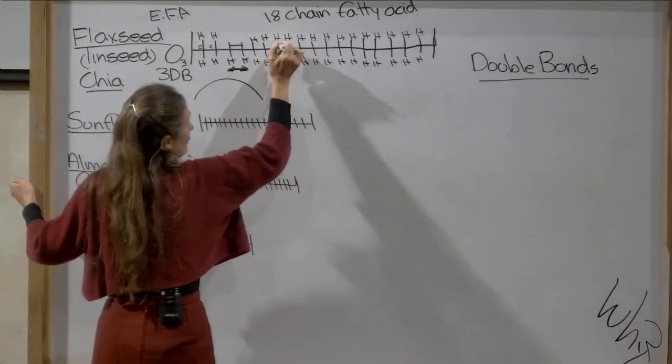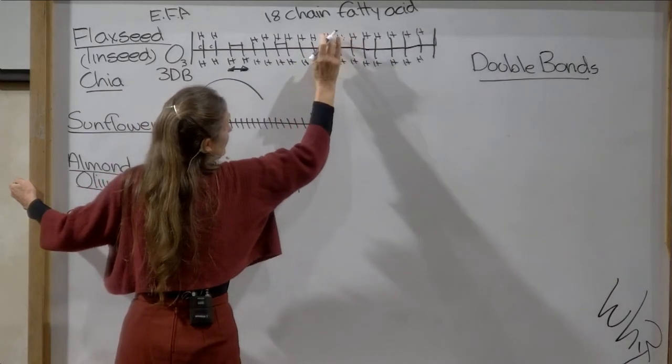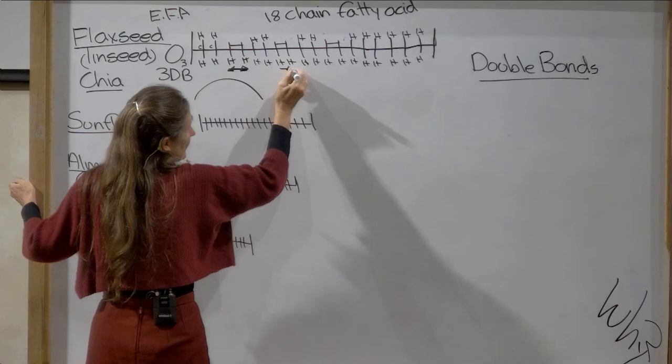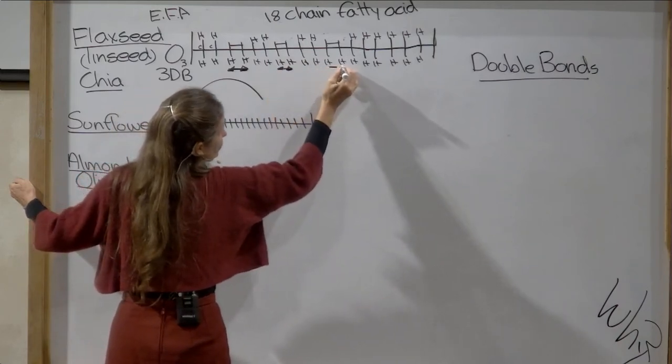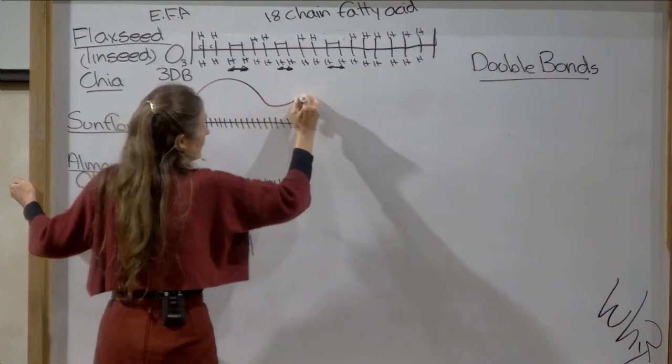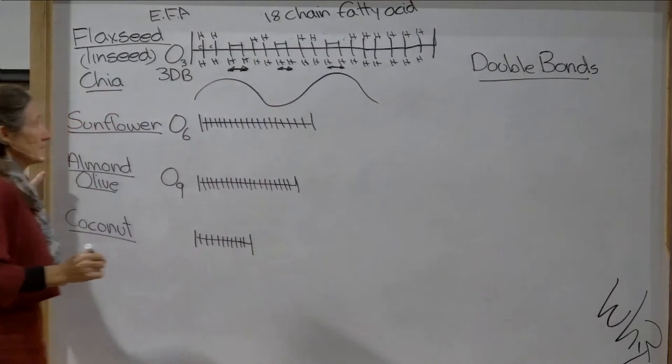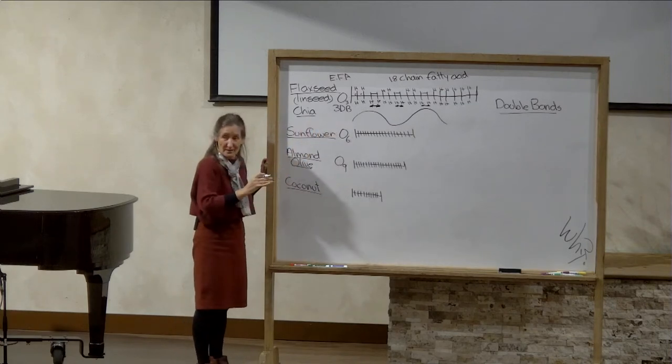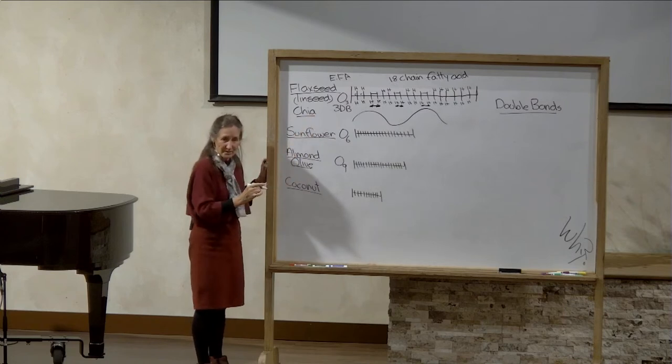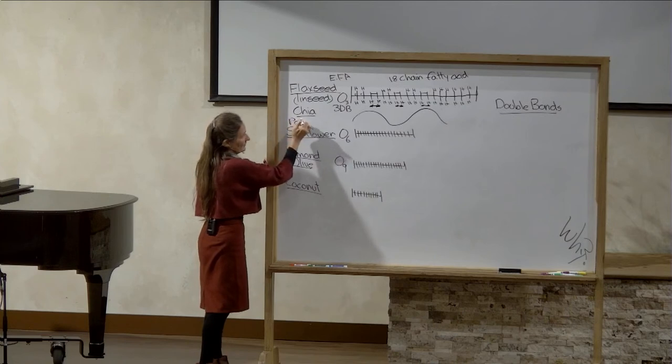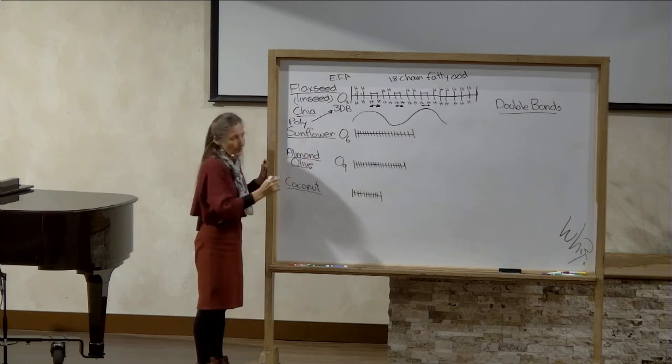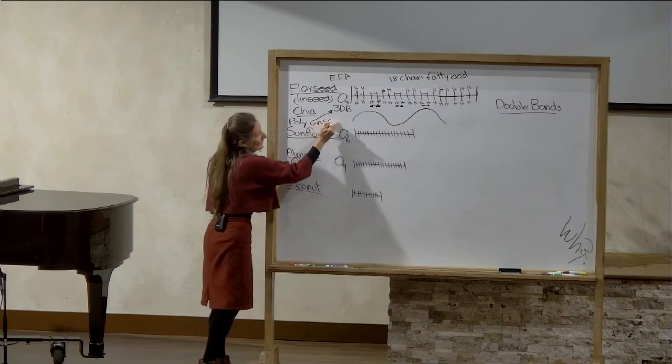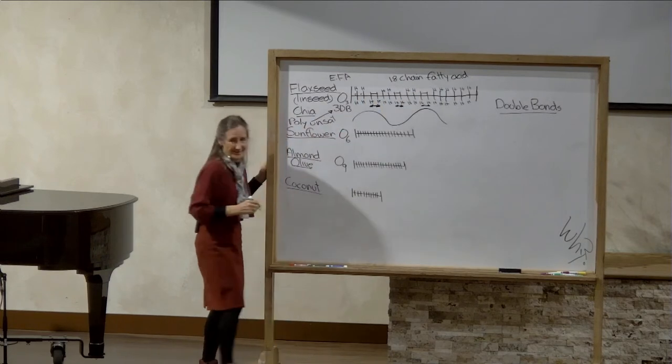In flaxseed or linseed, chia seed, there are three double bonds. So that's one, two, three, there's another one there. One, two, three, another one there. These hydrogen atoms are gone. The ones underneath develop an electromagnetic field between them. So this 18 chain fatty acid has three kinks in it. It's a very thin oil, very fluid. What did the British oil their cricket bats with? Linseed oil, because it disperses so easy. It's a thin oil because it's got three double bonds.